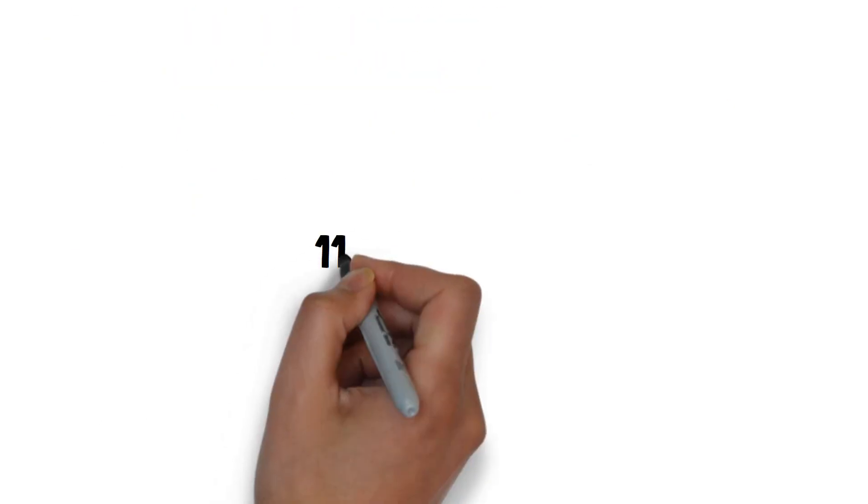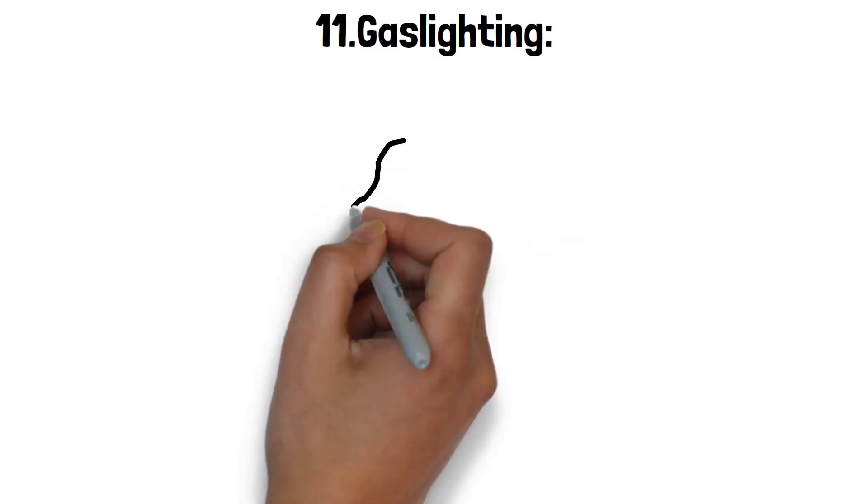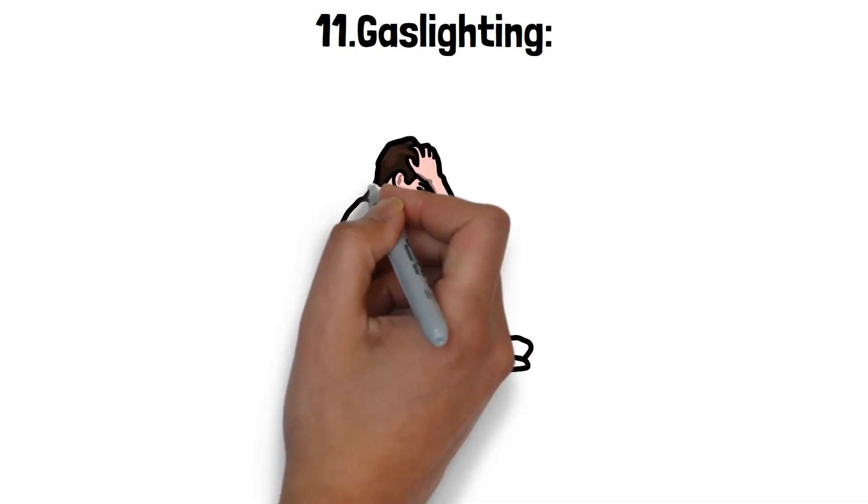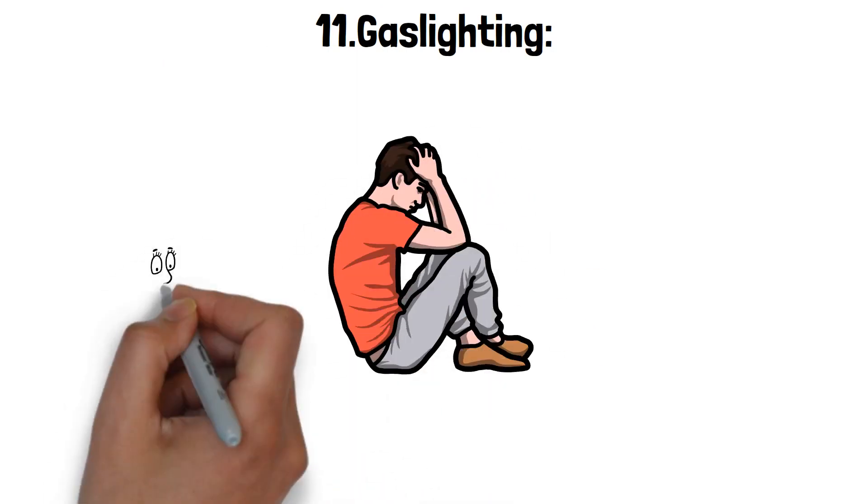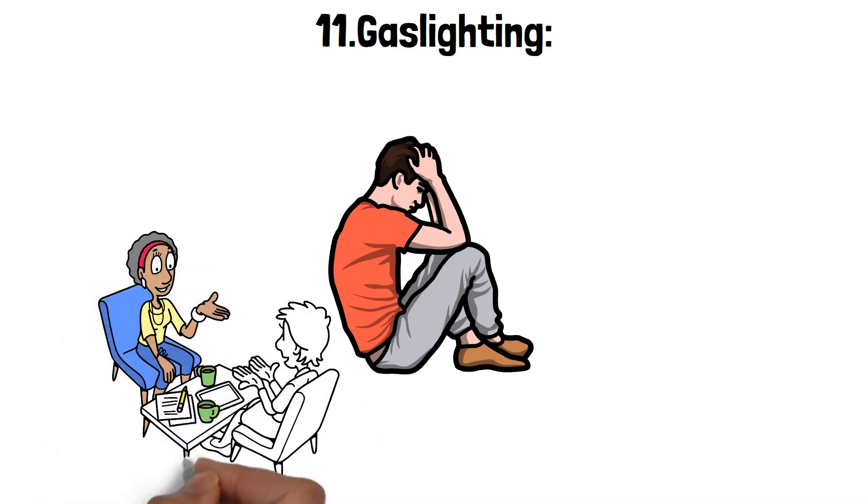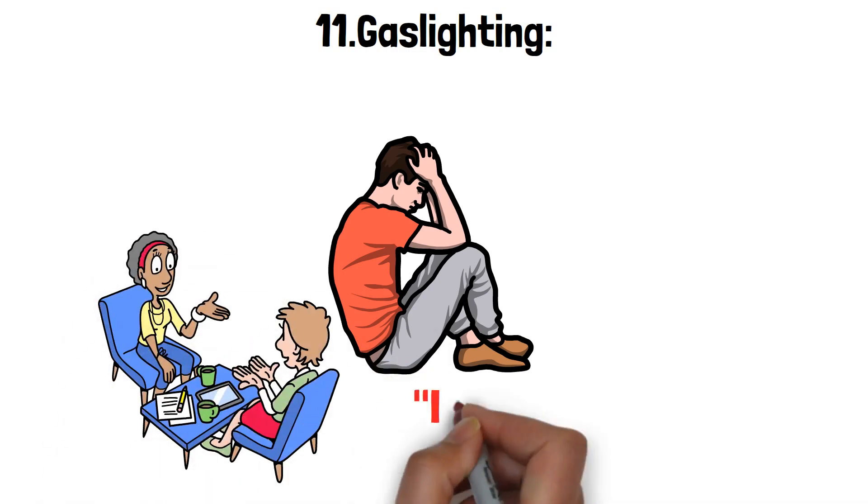11. Gaslighting. This manipulative tactic is her go-to for making you doubt your own perception of reality. Picture this. You vividly remember a conversation or event, but she insists it happened differently, or not at all.